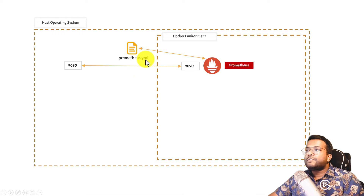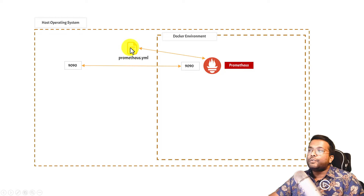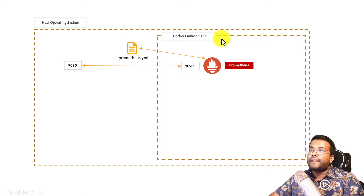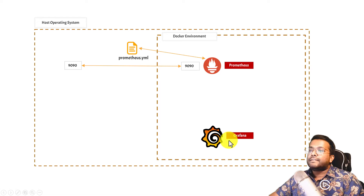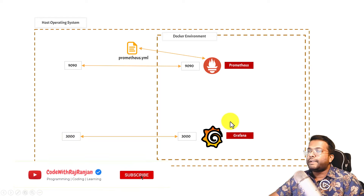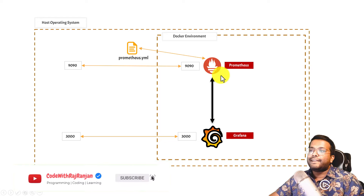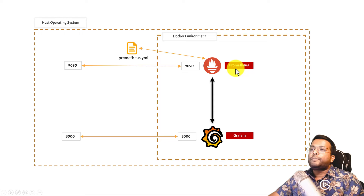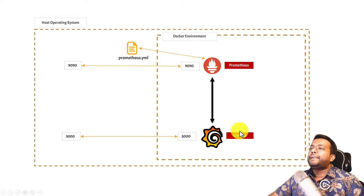There will be a Prometheus.yaml file present on your host operating system, and we will mount it into the Docker container so that any configuration changes — like adding new Prometheus exporters — on the host file will be reflected inside the Docker container. We will also install Grafana, which is the graphical interface to view metrics collected from Prometheus. Grafana will be exposed on port 3000 inside Docker, mapped to port 3000 on the host, and will point to Prometheus to read metrics and plot visualizations.